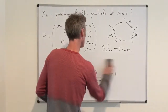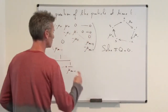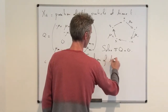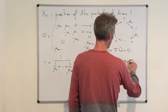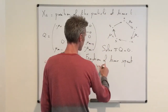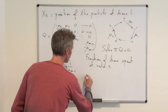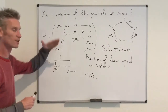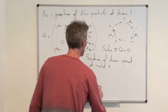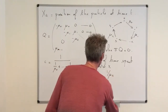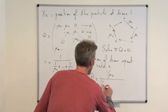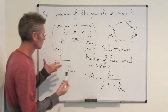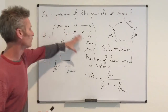So the fraction of time spent in state x in the long run — the fraction of time the particle spends at vertex x — is given by π_x, which equals (1/μ_x) divided by (1/μ_0 + 1/μ_1 + … + 1/μ_{n−1}). This is the answer.